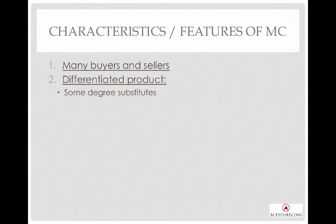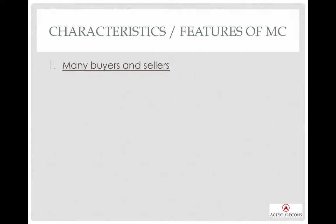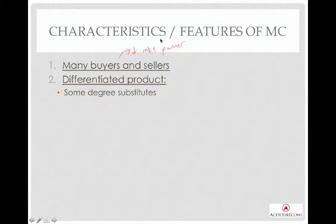These are the four characteristics to keep in mind. Number one, we have a lot of buyers and sellers, especially sellers. When we have a lot of sellers, there is a lot of competition, and when there is a lot of competition, you have low market power. Competition is inversely related to market power — the more competition, the less market power you have. The second characteristic is a slightly differentiated product. Please make sure to include the word 'slightly'.